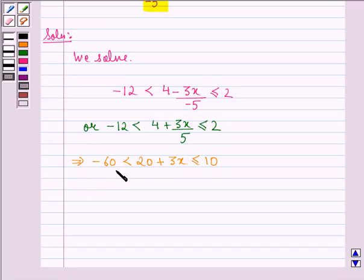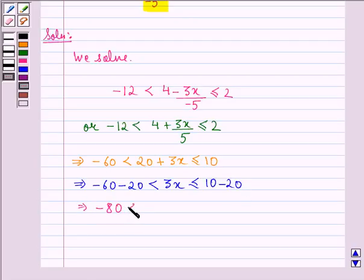Now in this inequality, we can take this 20 to both sides. So we get -60 - 20 < 3x ≤ 10 - 20. This implies -80 < 3x ≤ -10.